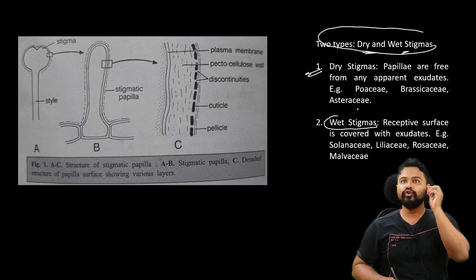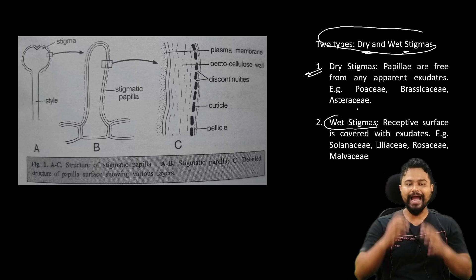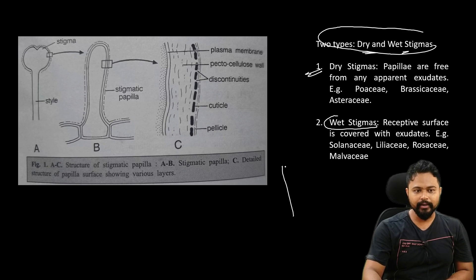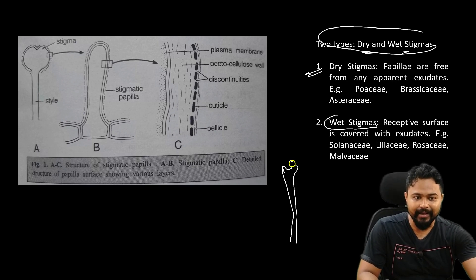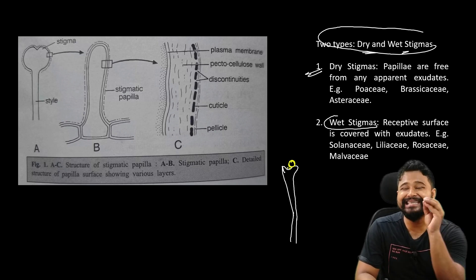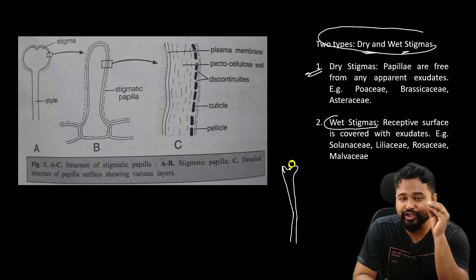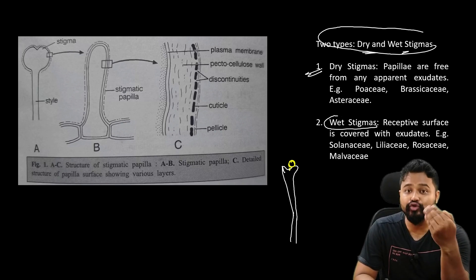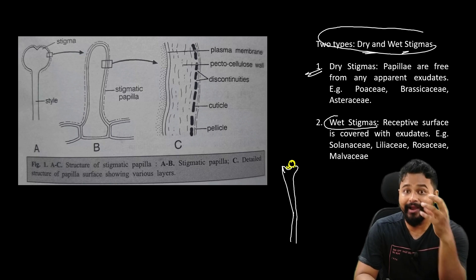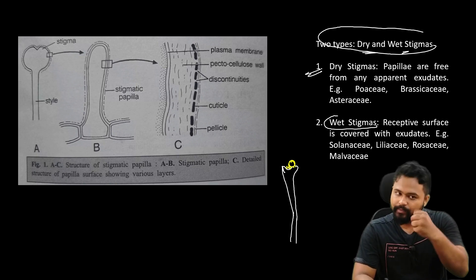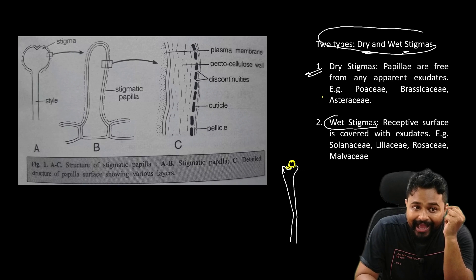When the stigma is dry, pollen can still germinate on it. For example, this stigma here — what shape is this stigma? Fork type. You can remember what the pollen is like — it is a sticky substance. So pollen lands because it is a sticky, watery substance. This is what makes pollen adhere to the dry stigma surface.